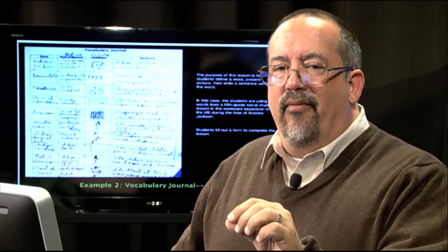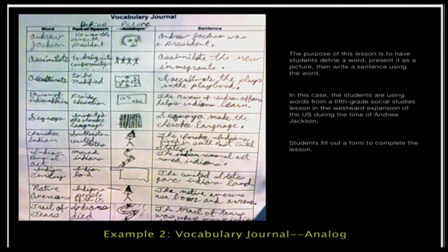For instance, Andrew Jackson, he was the seventh president. Then, the student actually drew a picture of Andrew Jackson. Then, they had to use that in a sentence. Andrew Jackson was a president. So, we've got the definition, the word, a picture, and then a sentence. This is a vocabulary journal, a very typical type of assignment.